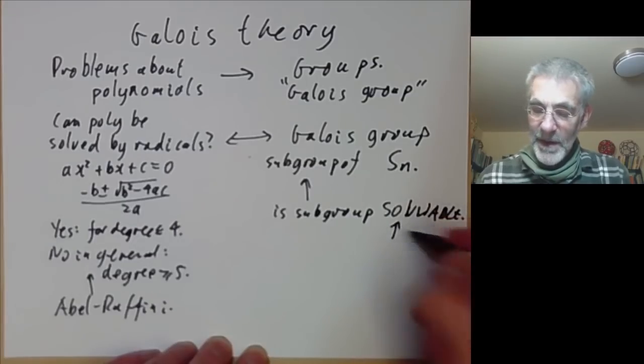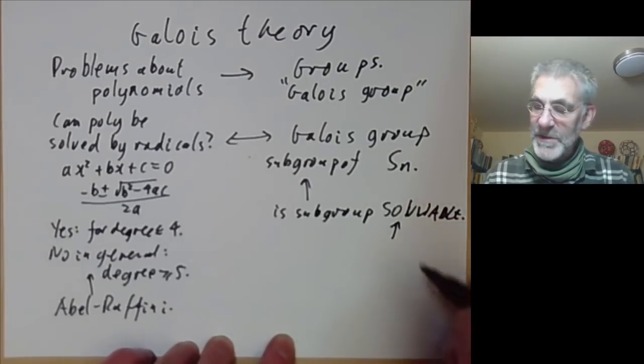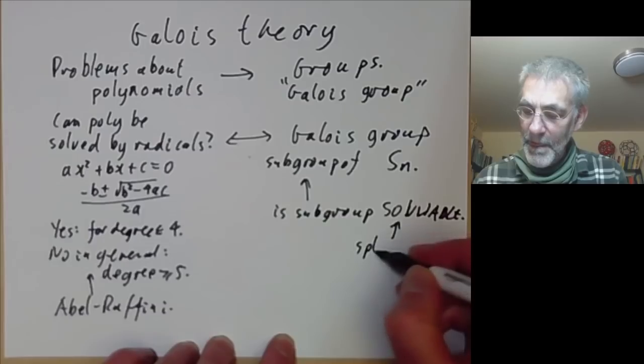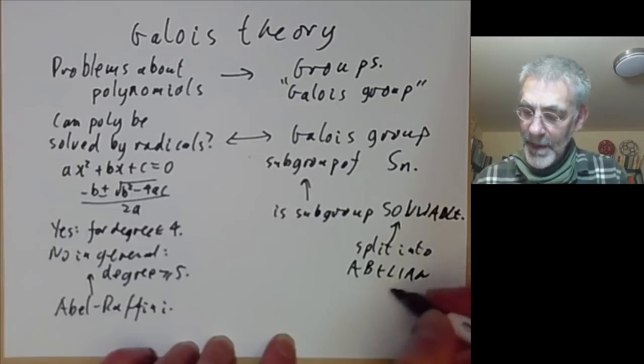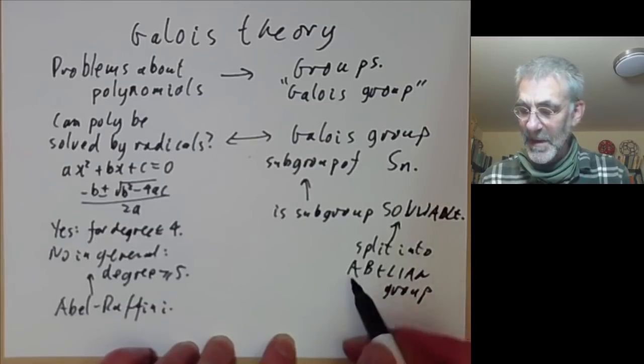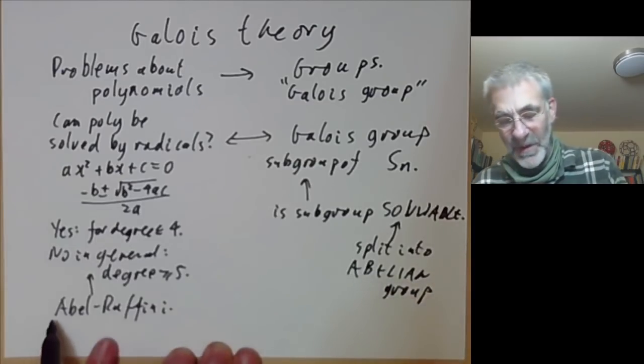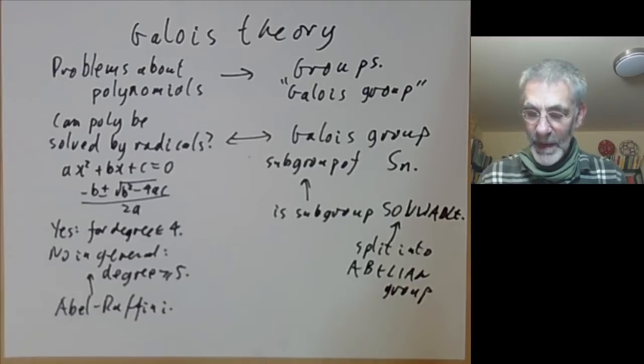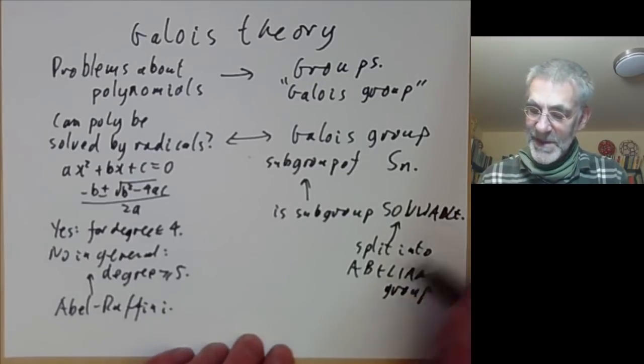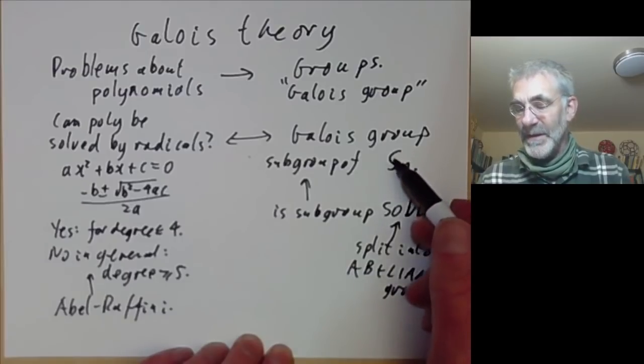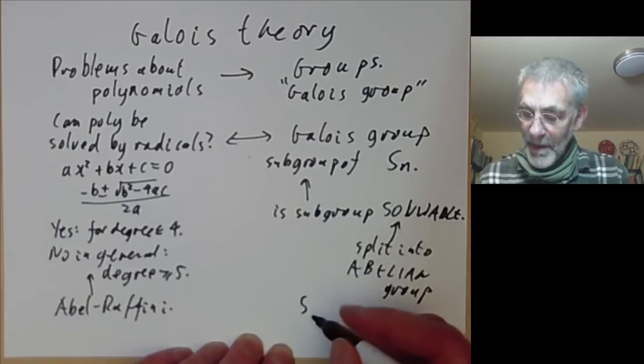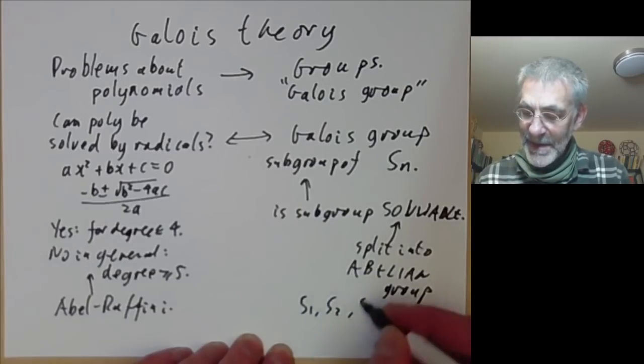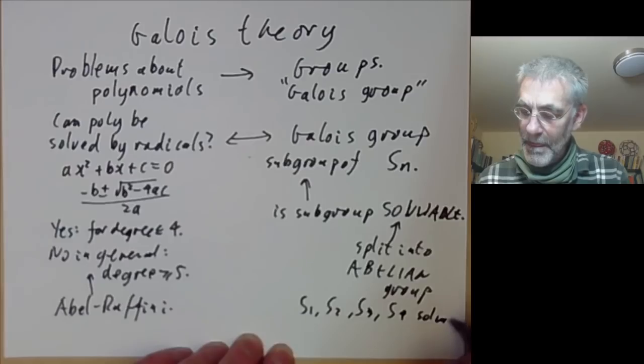Solvable means it can be split into abelian groups in some sense. Here abelian groups are of course named after Abel. For group theory it's fairly easy to show that the groups S1, S2, S3 and S4 are solvable but S5 is not.